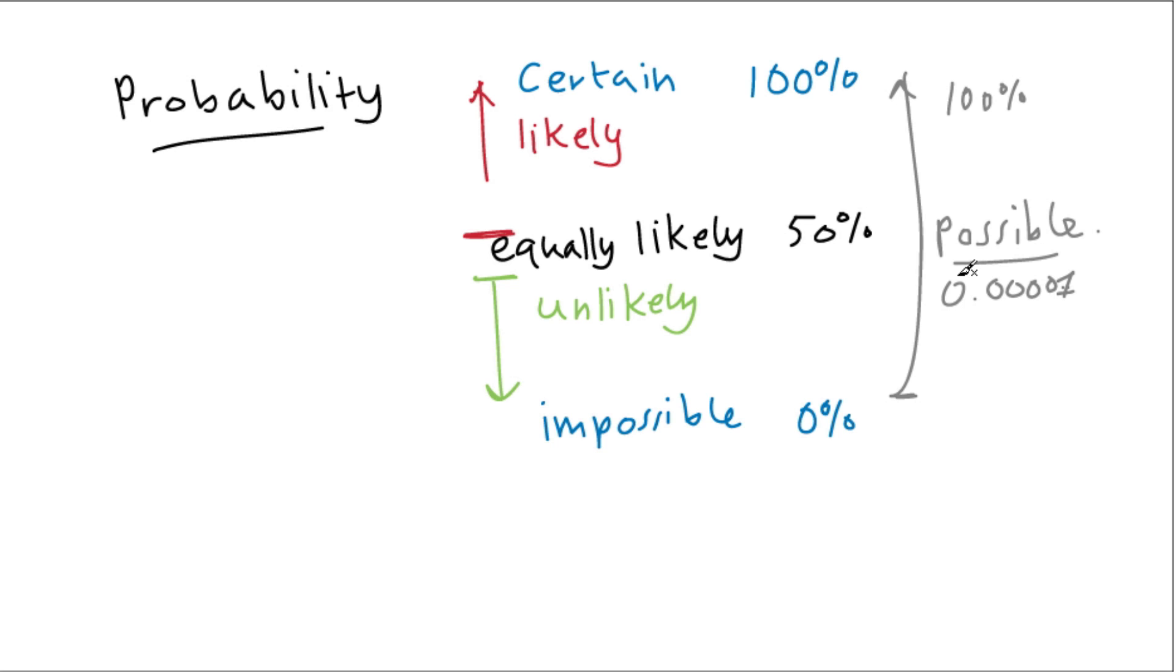Now, if something's probable, it means that it's very likely. It's probably going to happen. It's probable. And if we talk about something that's improbable, then it means that it's very, very unlikely. So, when you are using probability words in future, try and think whereabouts on this scale are you?